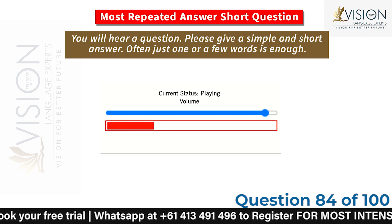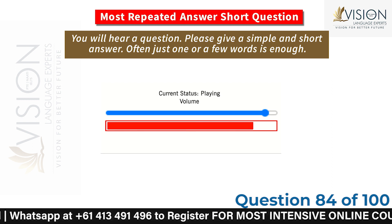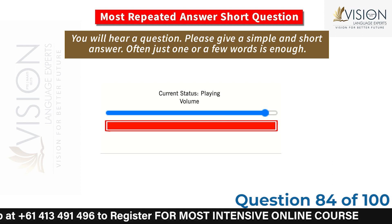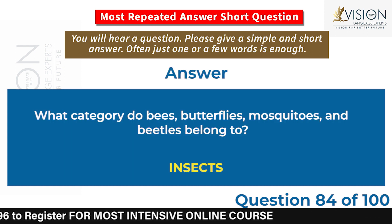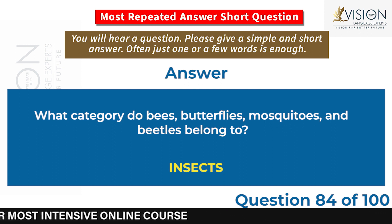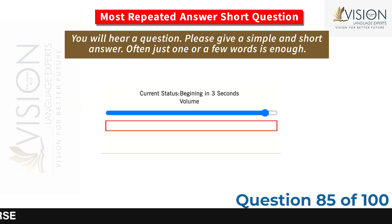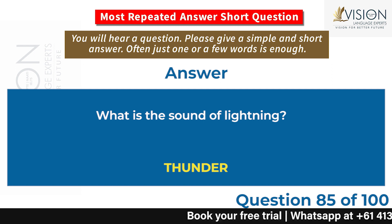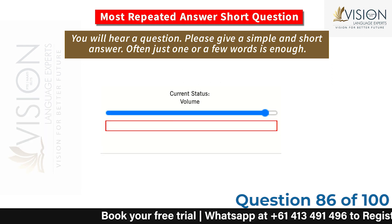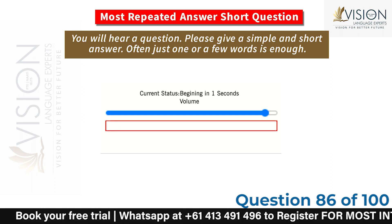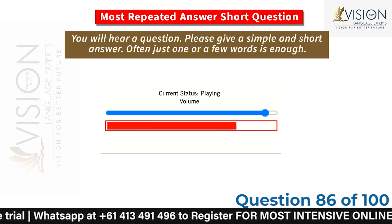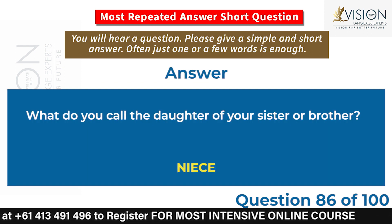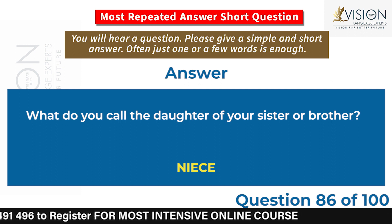What category do bees, butterflies, mosquitoes, and beetles belong to? Insects. What is the sound of lightning? Thunder. What do you call the daughter of your sister or brother? Niece.